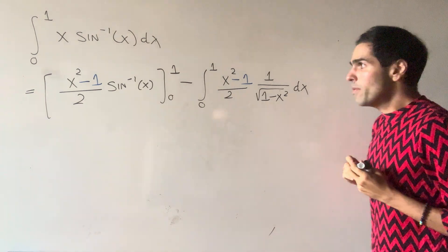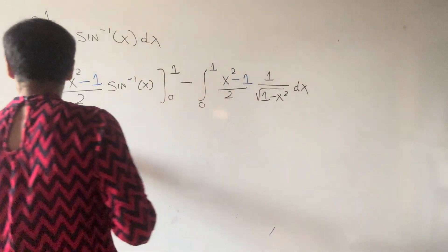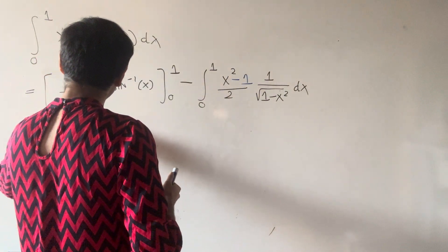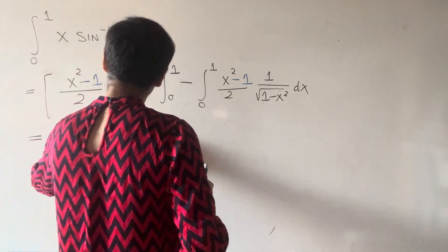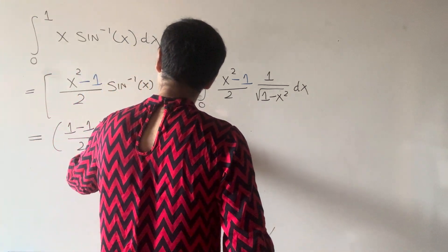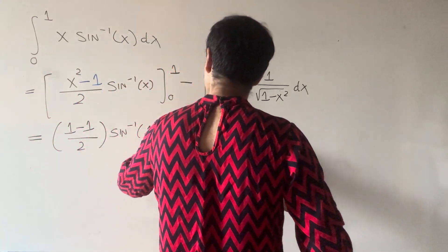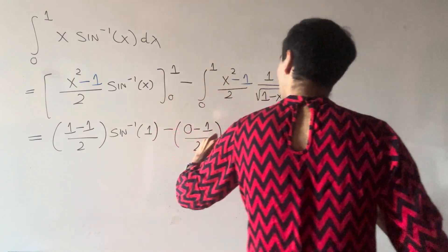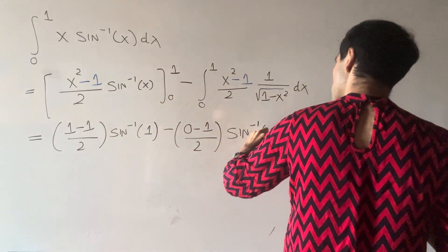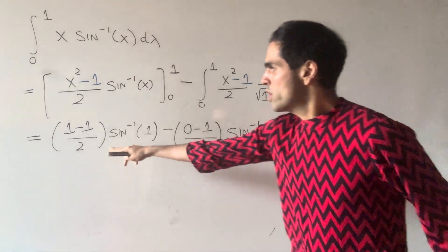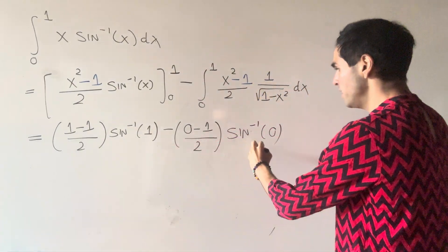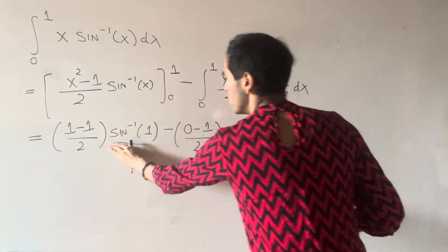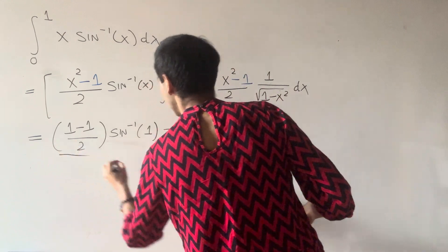What we end up getting is one minus one over two times arcsin(1), minus zero minus one over two times arcsin(0). This term is zero and this term is zero, so the boundary terms are zero — both here and here.